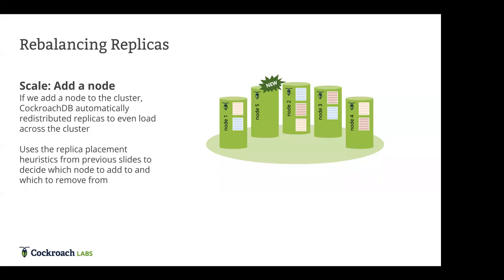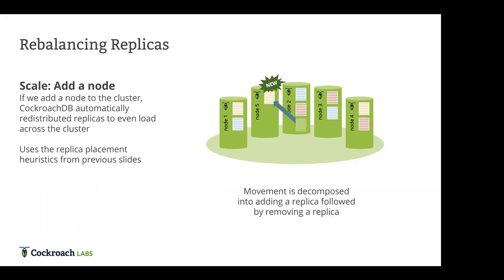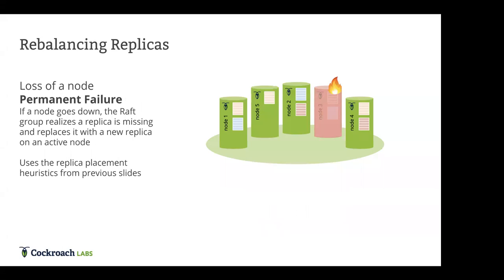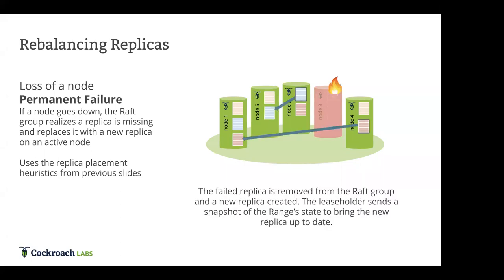If you add a node — you go into Kubernetes and scale up CockroachDB — it's going to create a node. CockroachDB is smart enough to actually redistribute the data, moving data from one node to the next and cleaning up the old set so that we have more even distribution across the nodes. What happens in the case of a permanent failure? If a node goes down, the Raft group realizes a replica is missing and replaces it with a new replica on an active node. This is how we actually survive and deliver resiliency across multiple different nodes in a distributed SQL database.